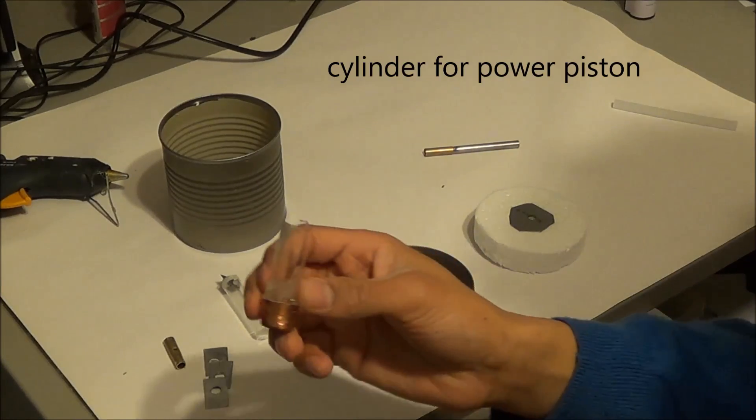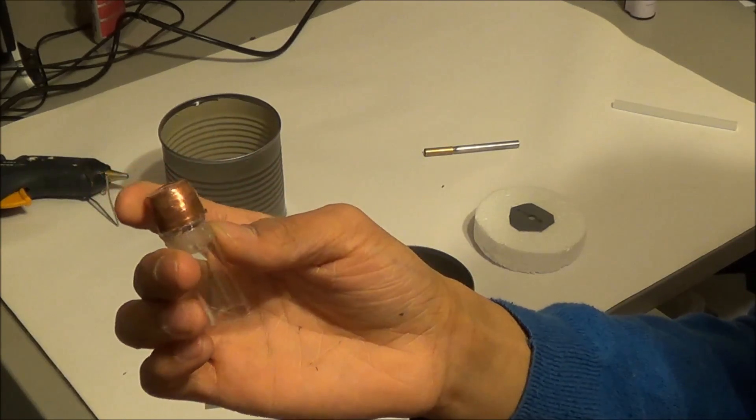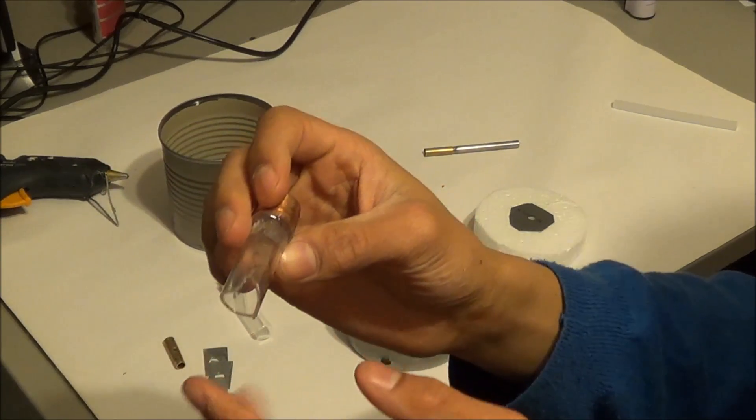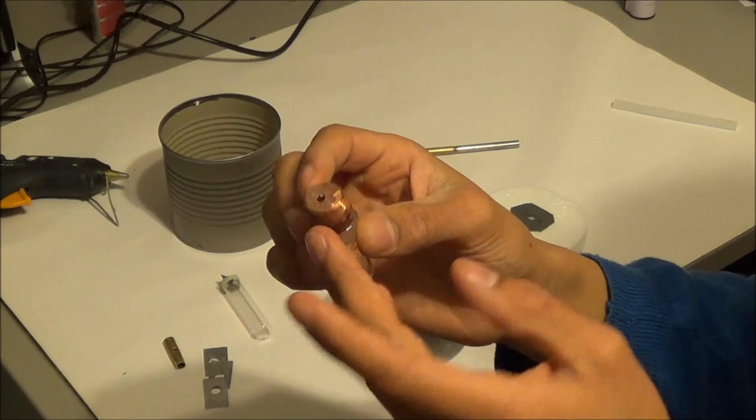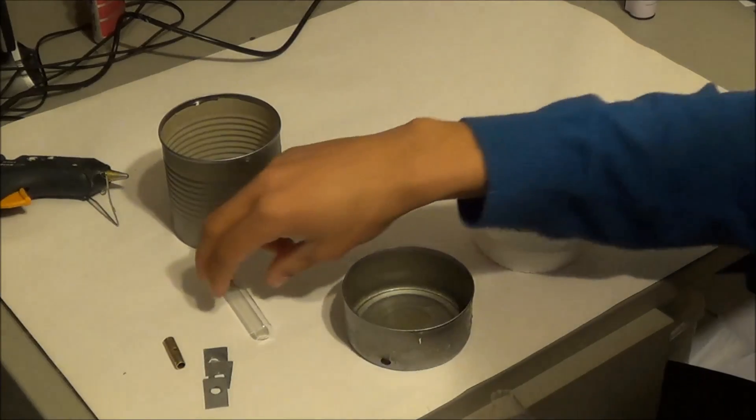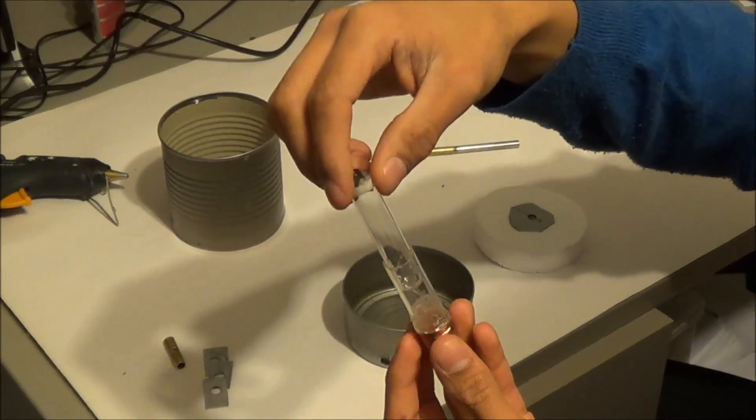So first I have my displacer piston right here. This is the cylinder for it. And I used a glass test tube right here that I cut. They don't cut very cleanly so you can see it's kind of broken inside of the end of a copper tube. And then the piston that fits perfectly inside it is another glass test tube.